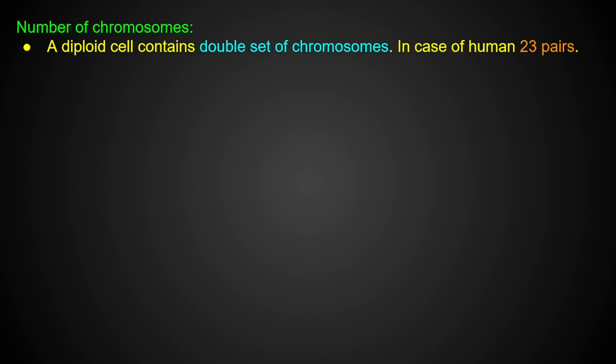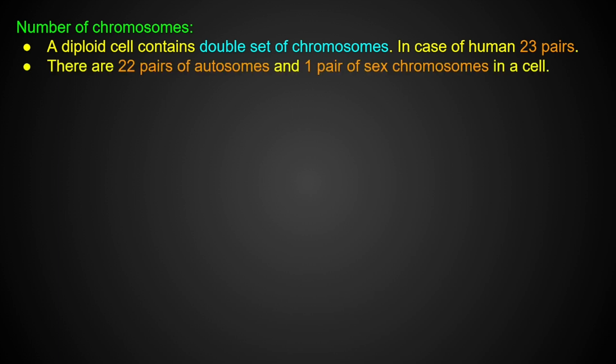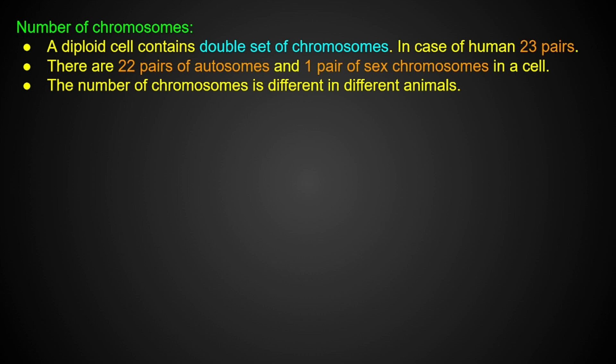Next is the number of chromosomes. The cell contains a double set of chromosomes. In the case of humans, there are 23 pairs of chromosomes — 22 pairs of autosomes, which determine physical appearance, and one pair of sex chromosomes. The number of chromosomes is different in different organisms.